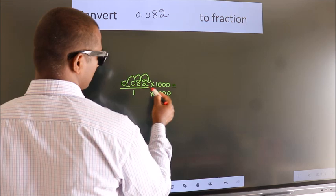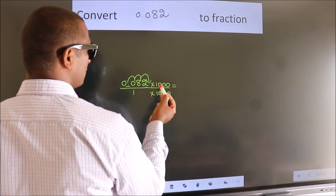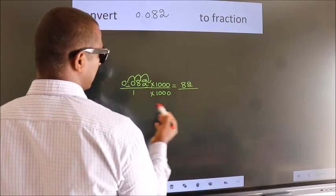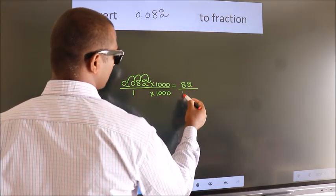Next, 0.082 into 1000, we get 82. In the denominator, 1 into 1000 is 1000.